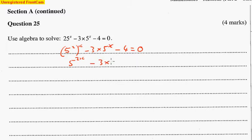So we get 5^(2x) minus 3 times 5^x minus 4. And this is the same as 5^(2x), which is the same as (5^x)^2 minus 3 times 5^x minus 4.